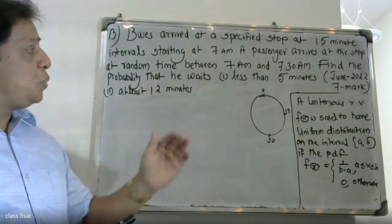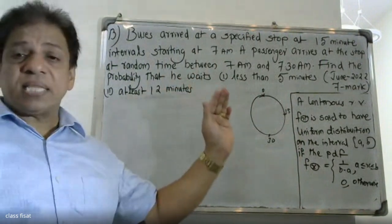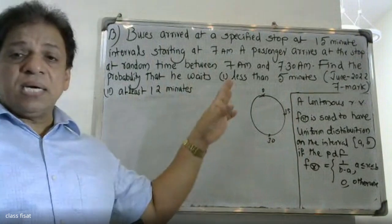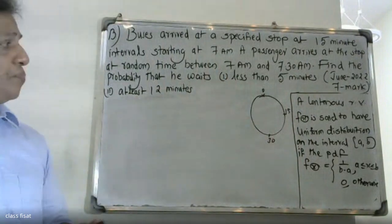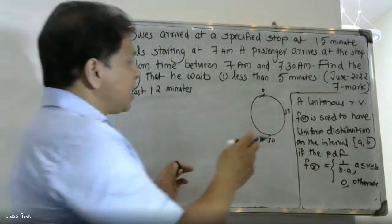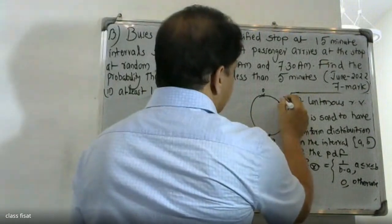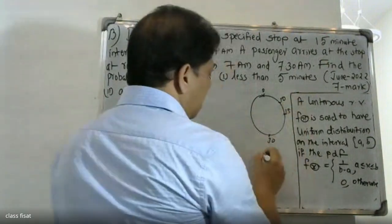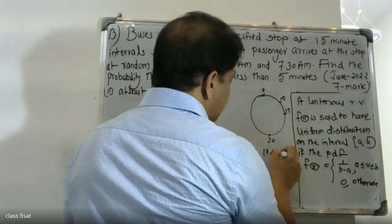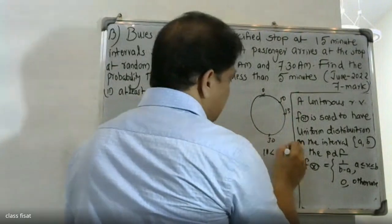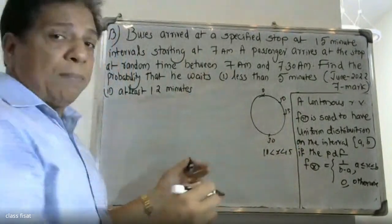So we will start with the next problem. We have 10 less than x less than some upper value. We will start with that setup now.